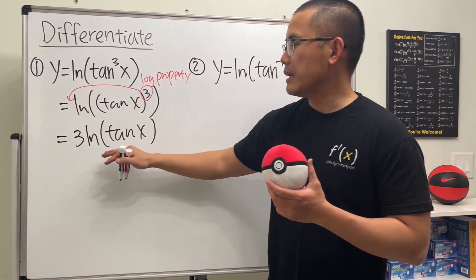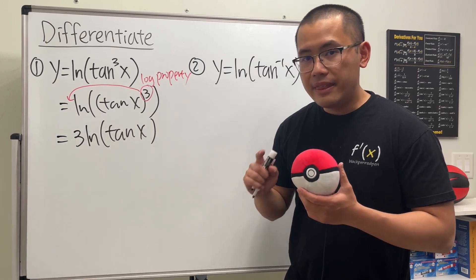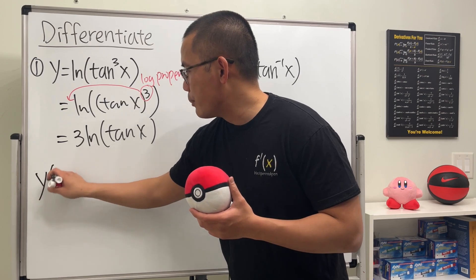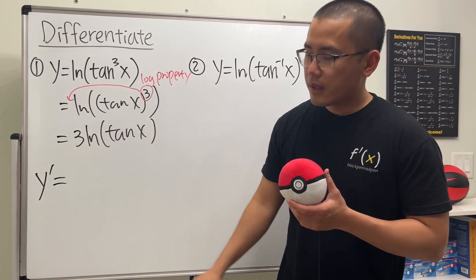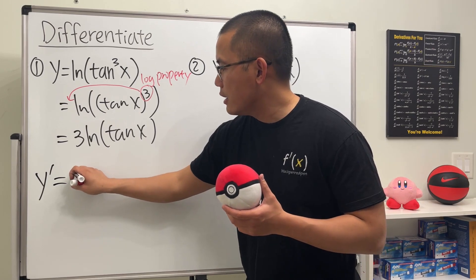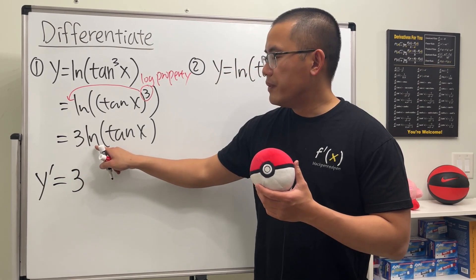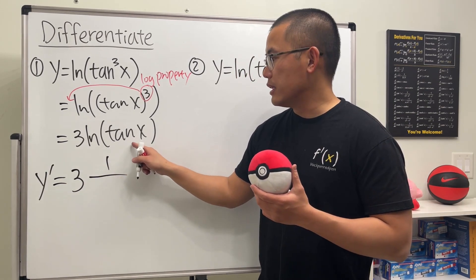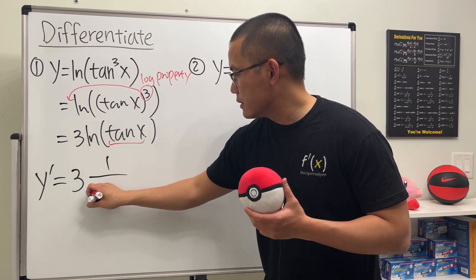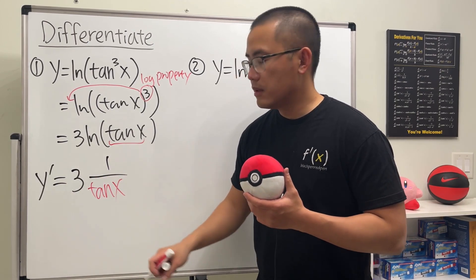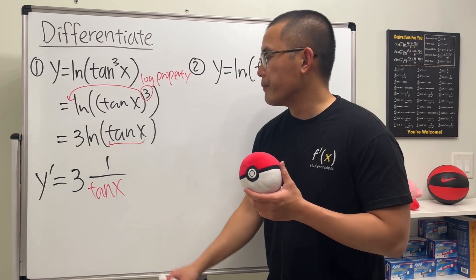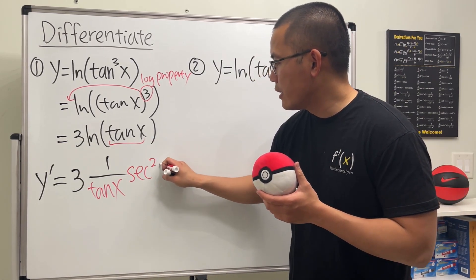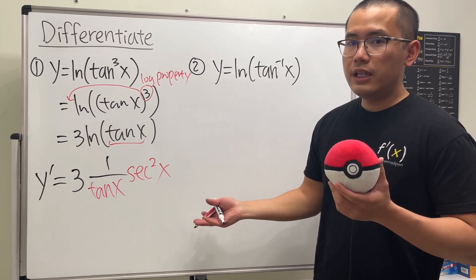So y is the same as 3·ln(tan x), and we can do the derivative based on that. y prime: the constant 3 stays out front. The derivative of ln gives us 1 over whatever is inside, which is tangent of x. But we are not done yet, because we use the chain rule — the derivative of tan(x) is sec²(x).